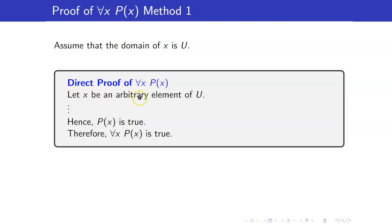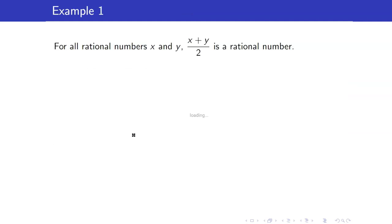So this proof has the following form: we start with 'let x be an arbitrary element of U', show that P(x) is true, and therefore conclude that 'for all x, P(x)' is true.